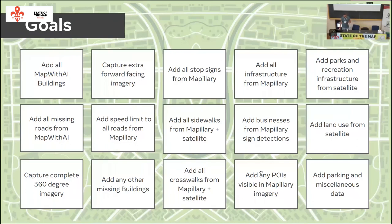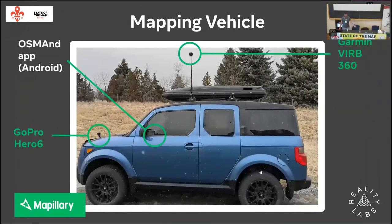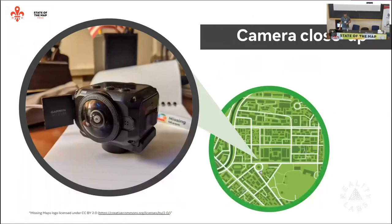Looking at the journey itself, I drove about one hour from my hometown to this rural area. My mapping vehicle used OSMAnd for navigation and GPS tracing. I had a GoPro outside the car with a magnet mount, forward-facing, which works well under about 50 km/h, and a Garmin 360 camera on the roof — there are many other 360 cameras and you can read recommendations on the Mapillary blog.